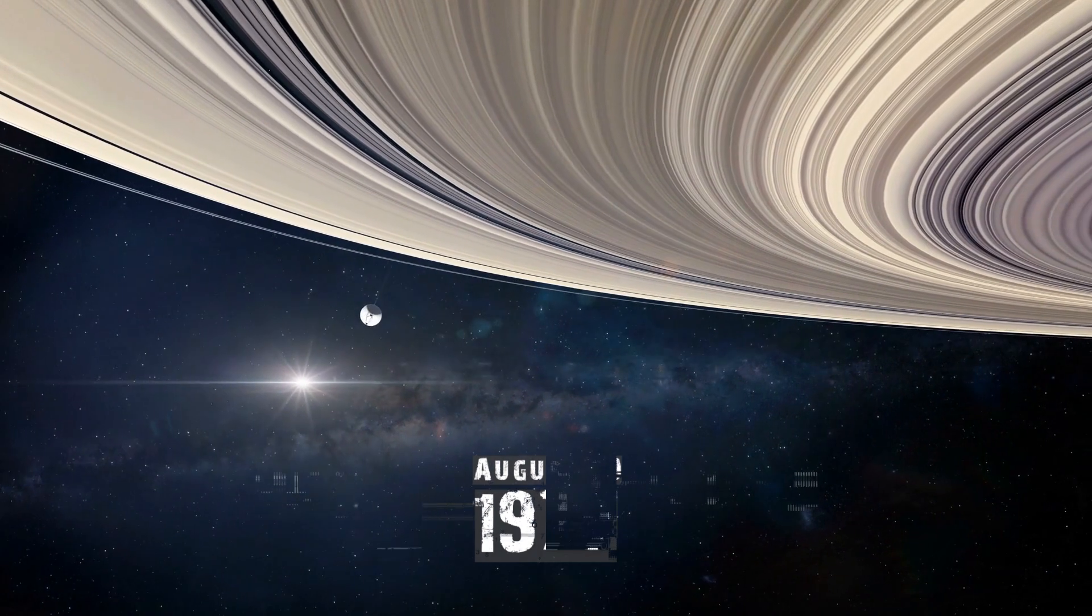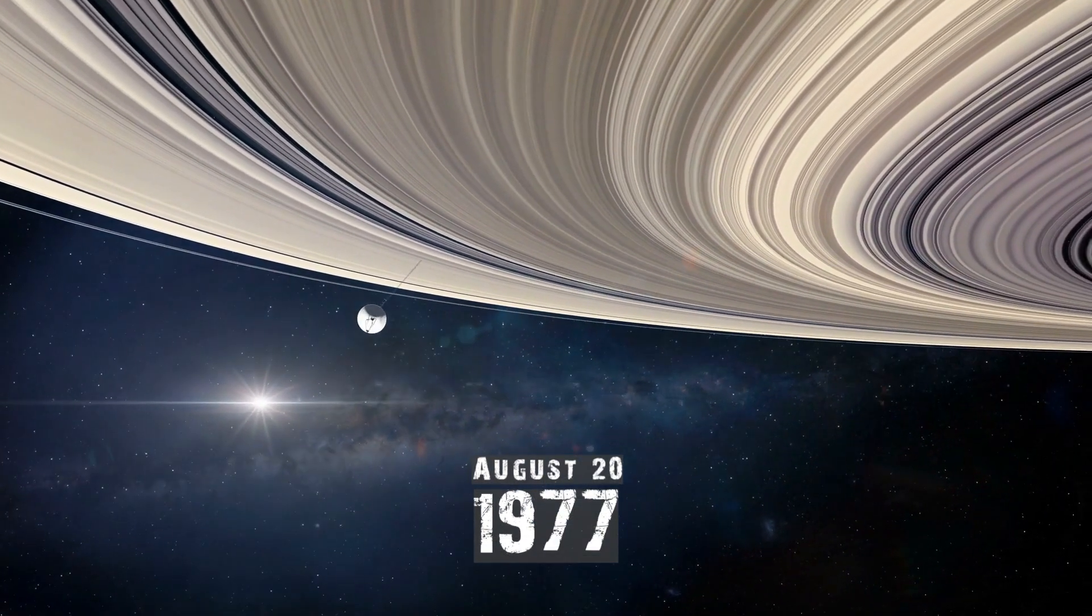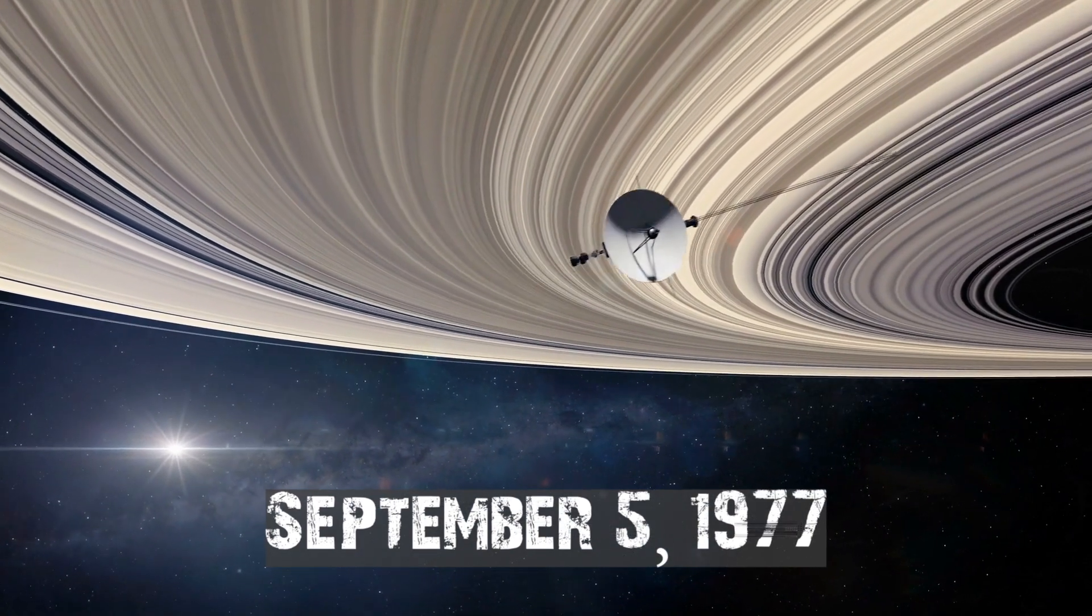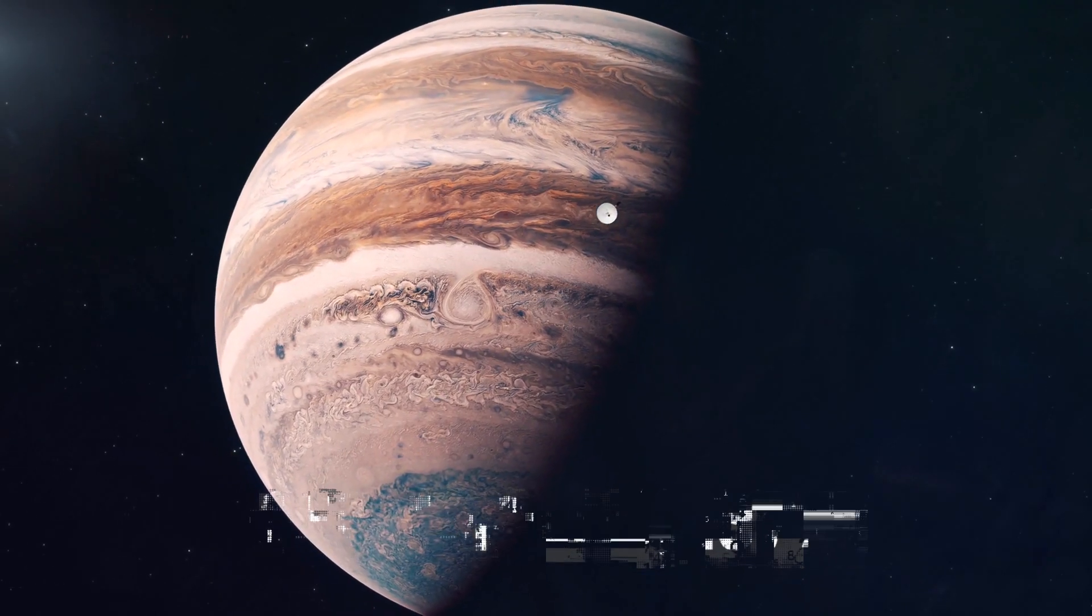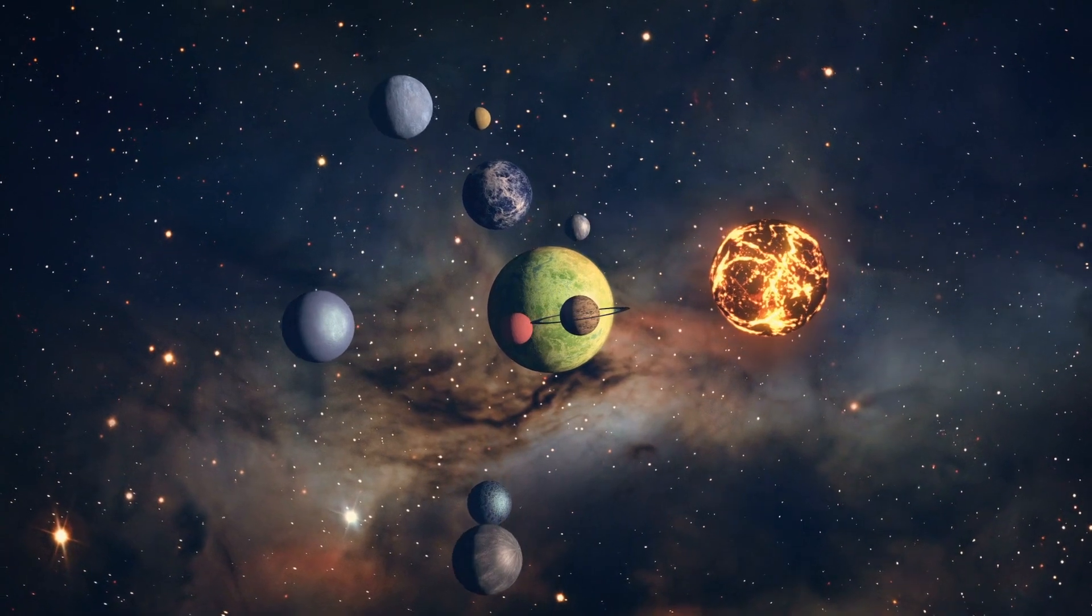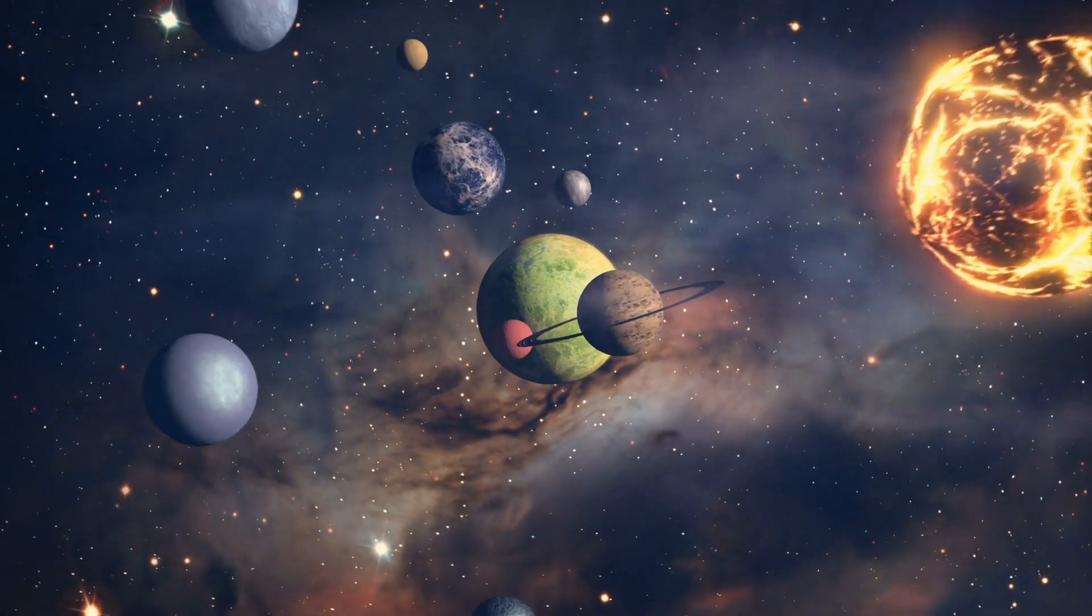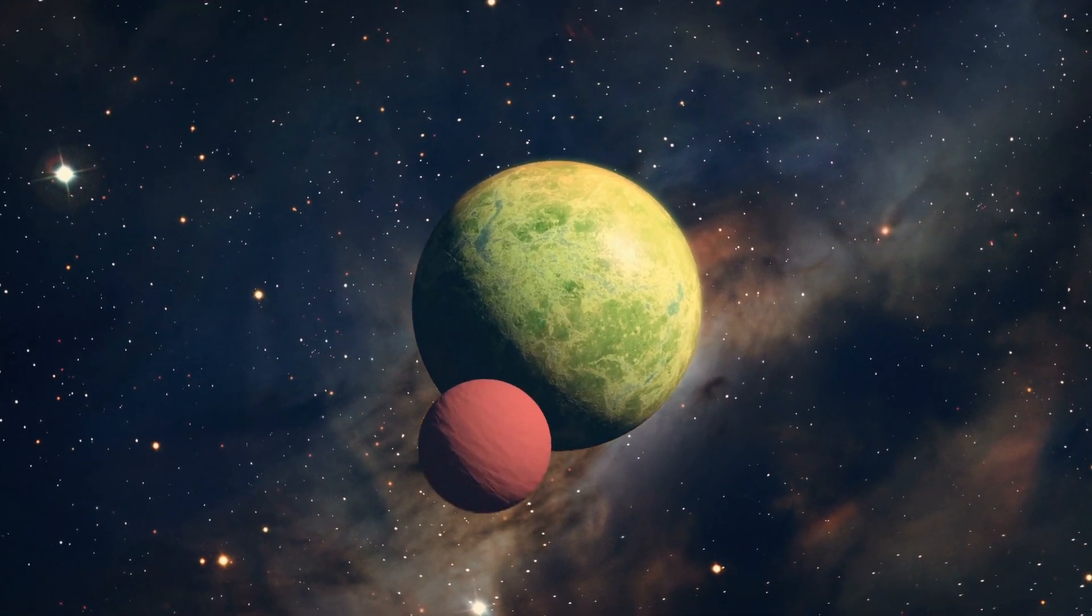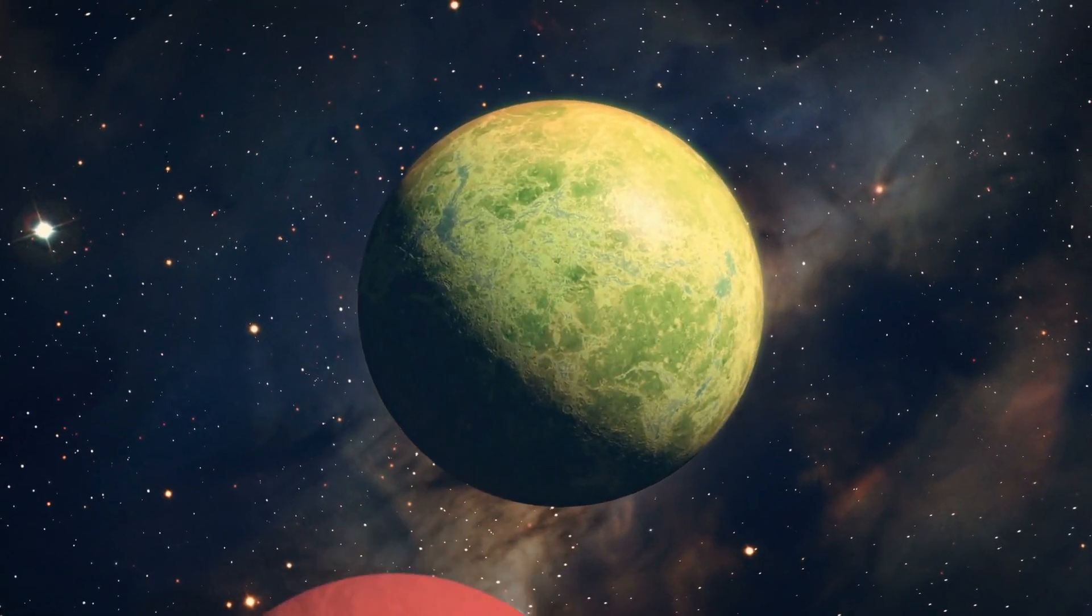Voyager 2 was launched first on August 20, 1977, followed by Voyager 1 on September 5, 1977. It took the use of an unusual orbital placement of Jupiter, Saturn, Uranus, and Neptune that allowed a multi-planet tour with very low fuel consumption and flying duration for the twin spacecraft expedition.